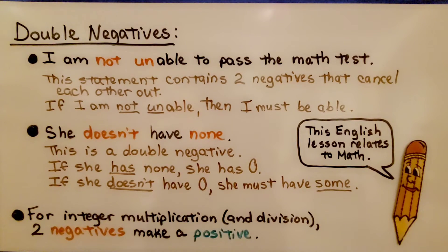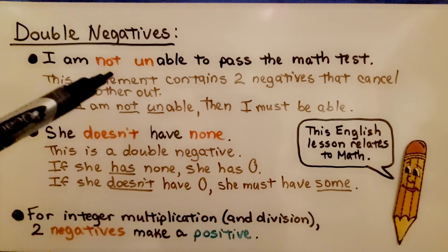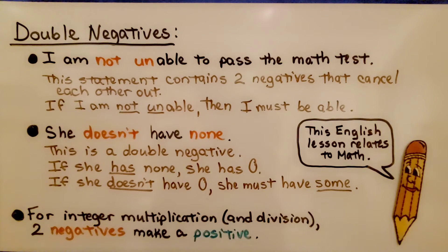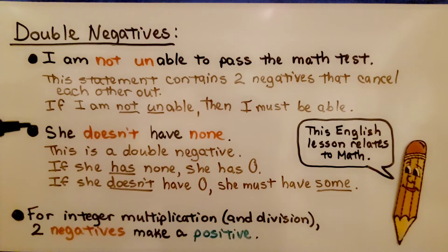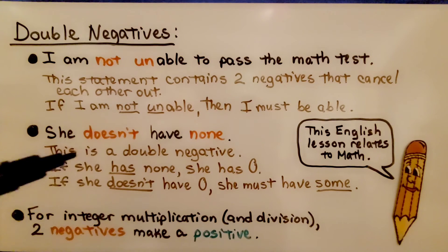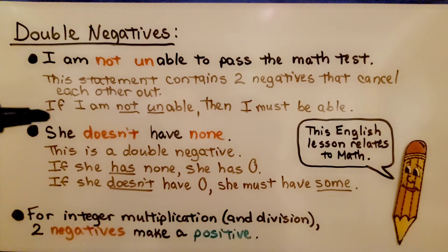Now let's talk about double negatives. This sentence says: 'I am NOT unable to pass the math test.' This statement contains two negatives — NOT and the prefix UN — and they cancel each other out. If I am NOT unable, then I must be able. Here's another: 'She doesn't have none.' This is a double negative. If she has none, she has zero; if she doesn't have zero, she must have some. For integer multiplication and division, two negatives make a positive.